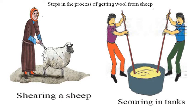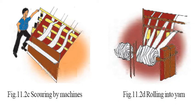This is the process of getting wool from the sheep. How to process the sheep, then what will it be for the machine, and then rolling into yarn.